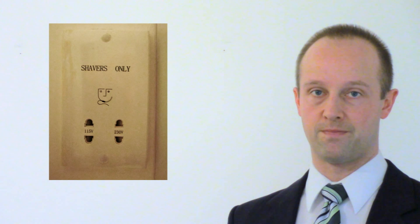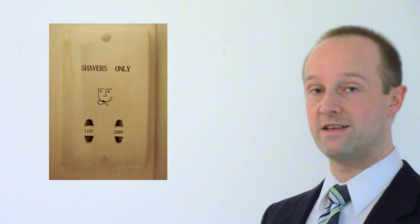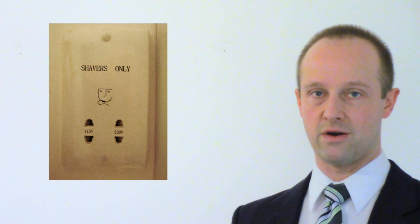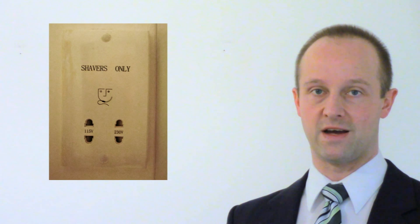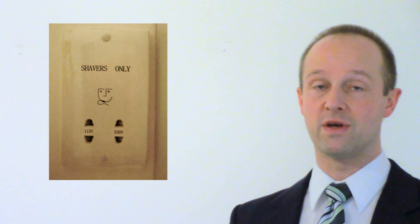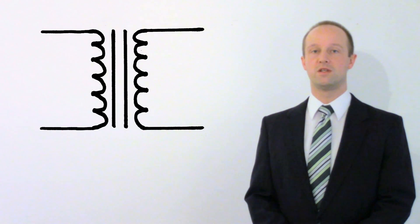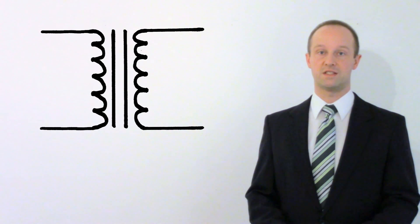A good example of this is for a shaver outlet in a bathroom. Shaver outlets will have exactly this sort of setup behind them so that there's not normally any current flowing from the shaver outlets. It's isolated so it's not connected directly to the mains. We can use this for more than just isolating electrical supplies for safety though.